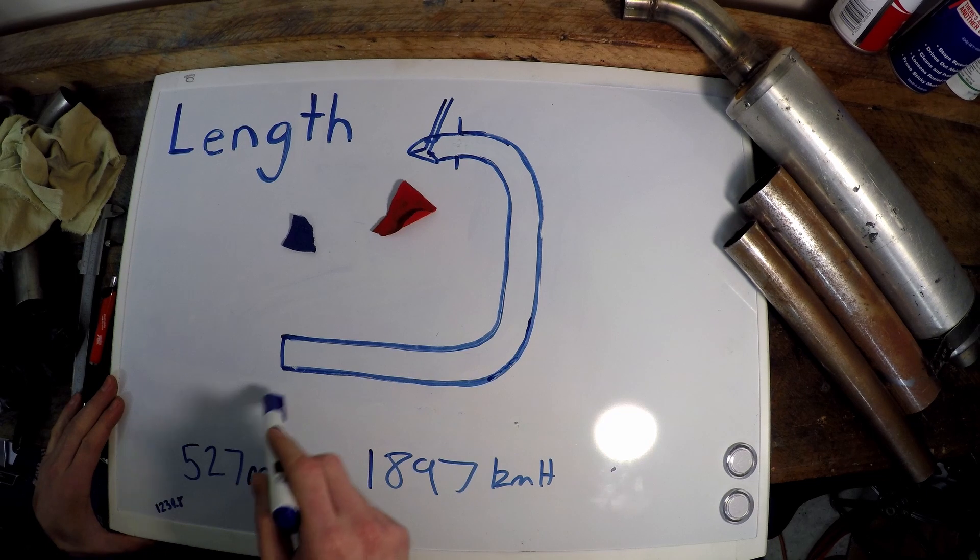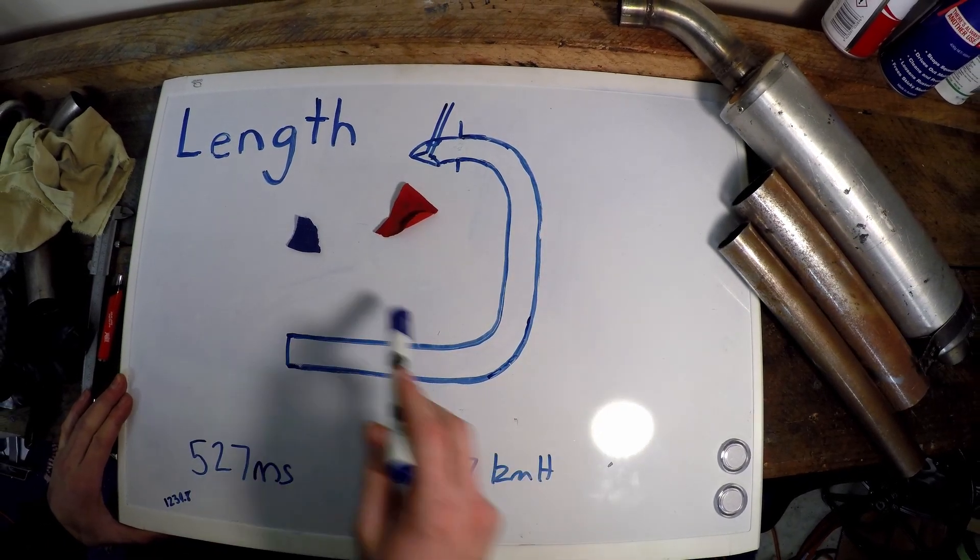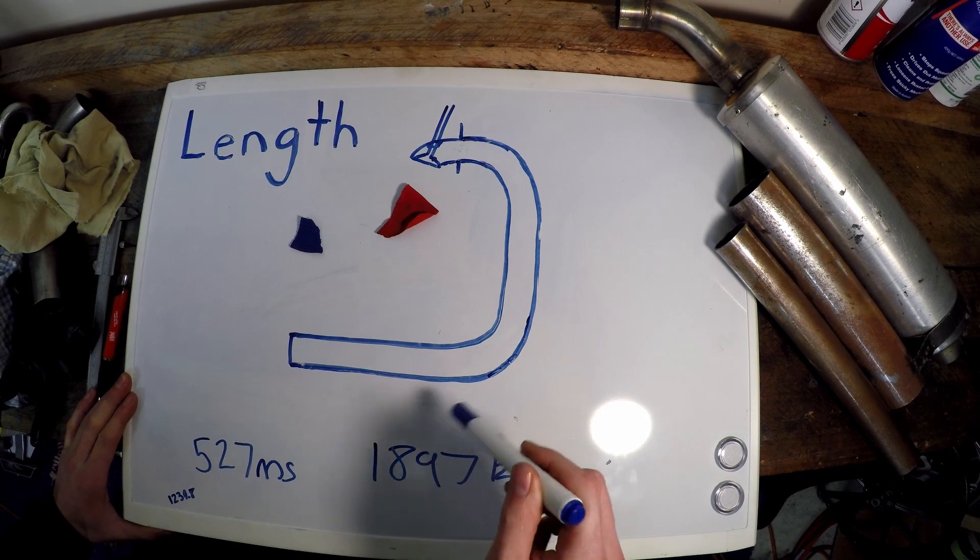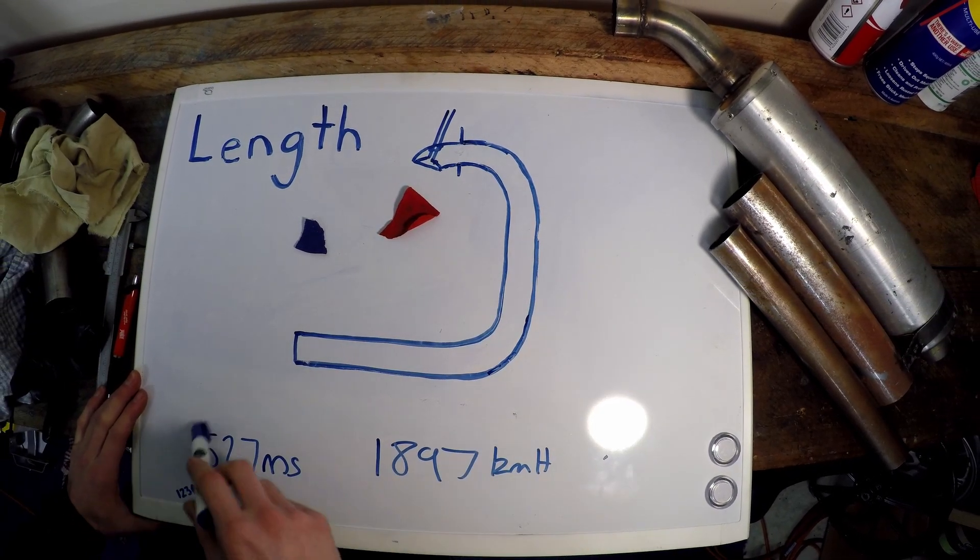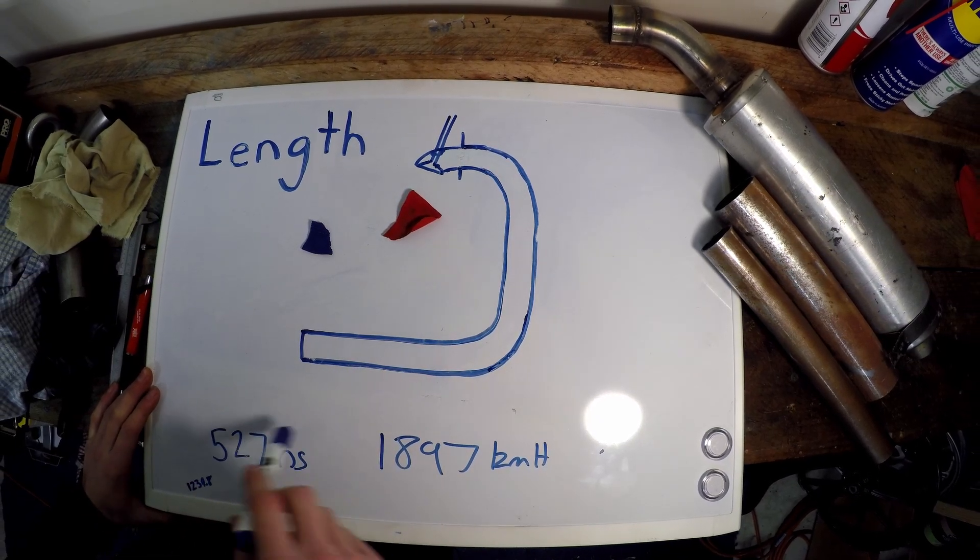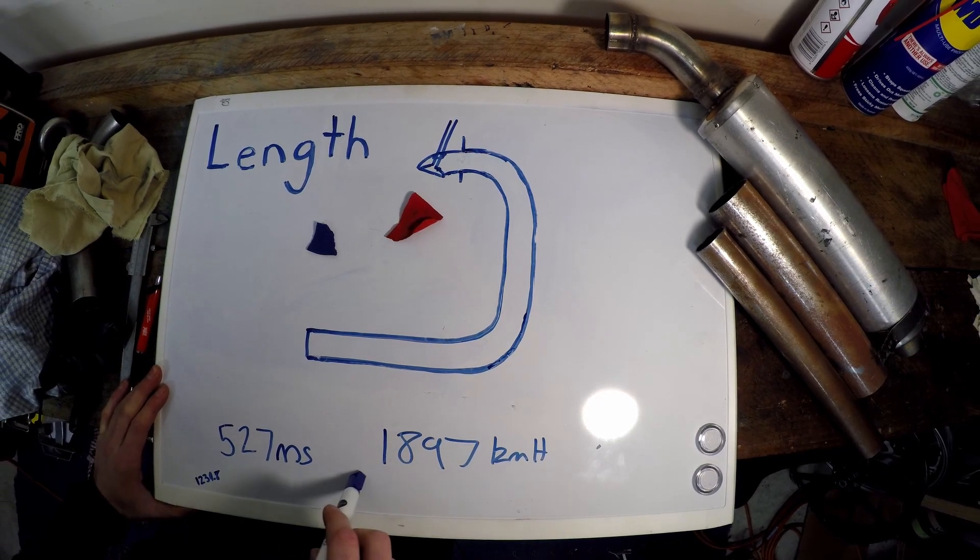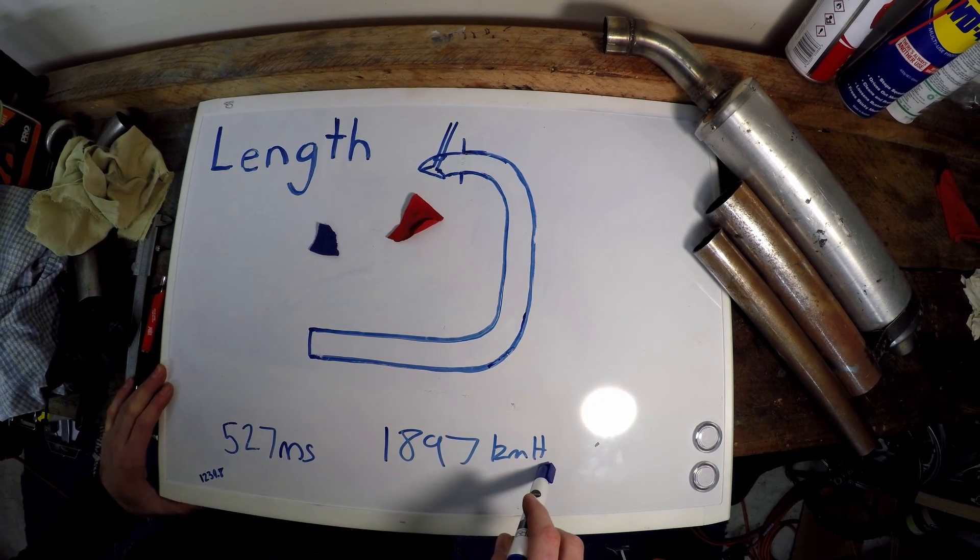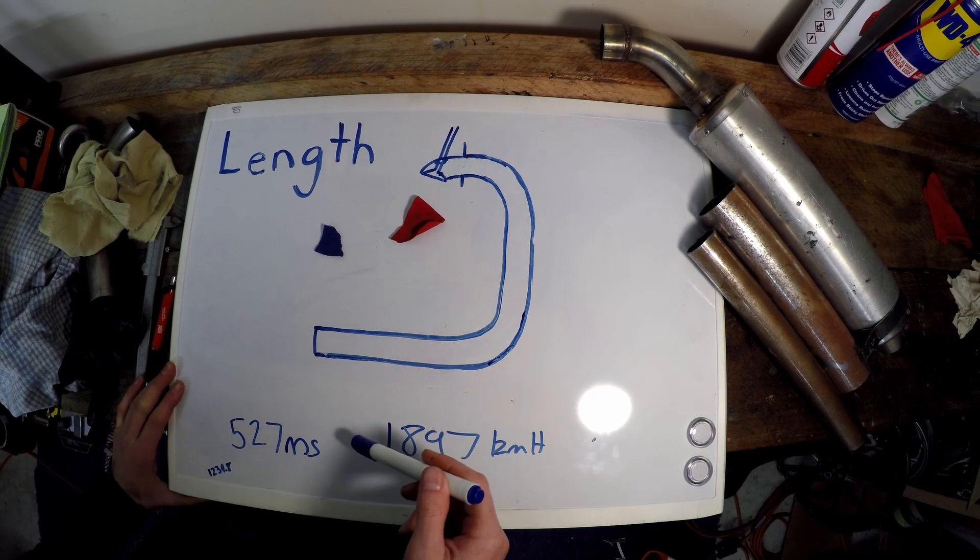Another thing to quickly note: because our exhaust is running way hotter than room temperature, which is what the speed of sound is standardly measured at, our speed of sound will be faster inside our exhaust. At 420 degrees Celsius, it's 527 meters per second, which is 1,897 kilometers per hour, which is almost as fast as my race bike.